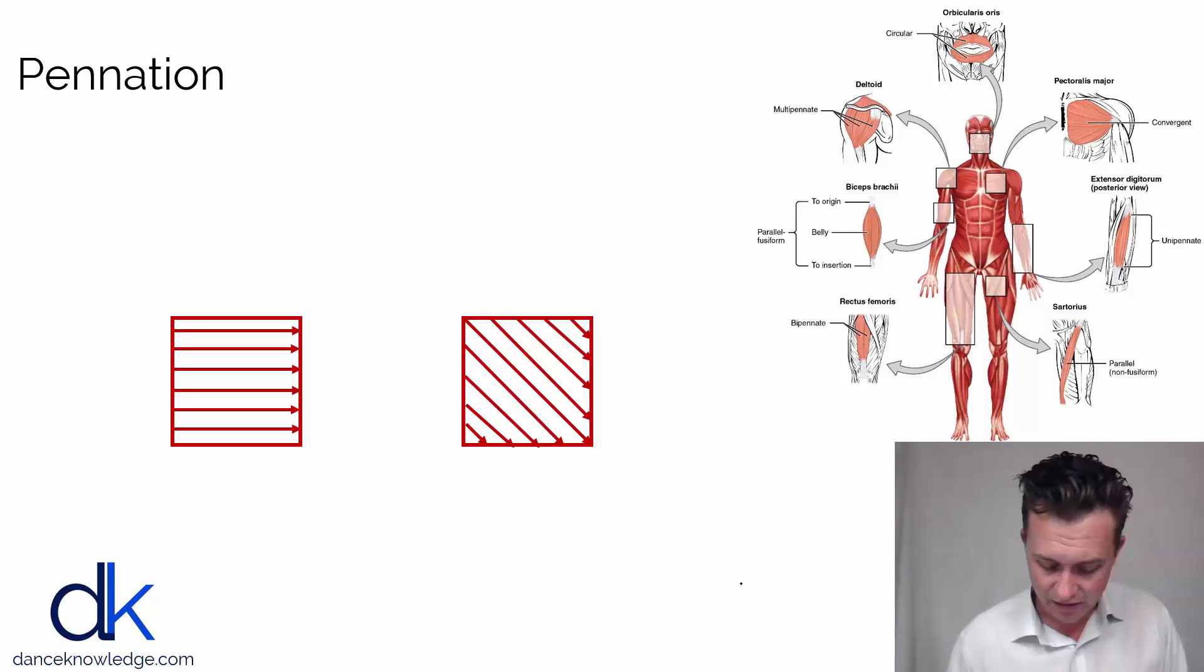So if we look back here at all of our different muscle types, and in particular the rectus femoris and the deltoid, you can see the rectus femoris is described as being bipennate, whereas the deltoid is referred to as being multipennate.